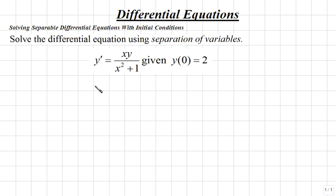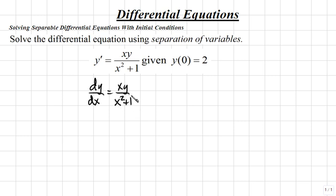To begin, let's write y' as dy over dx equals xy over x squared plus 1. Our goal, using separation of variables, is to multiply or divide both sides of this equation so that expressions containing y are on one side and expressions containing x are on the other. We already have x over x squared plus 1 on the right, but we have the variable y, so we'll multiply both sides by 1 over y to get y on the left side.